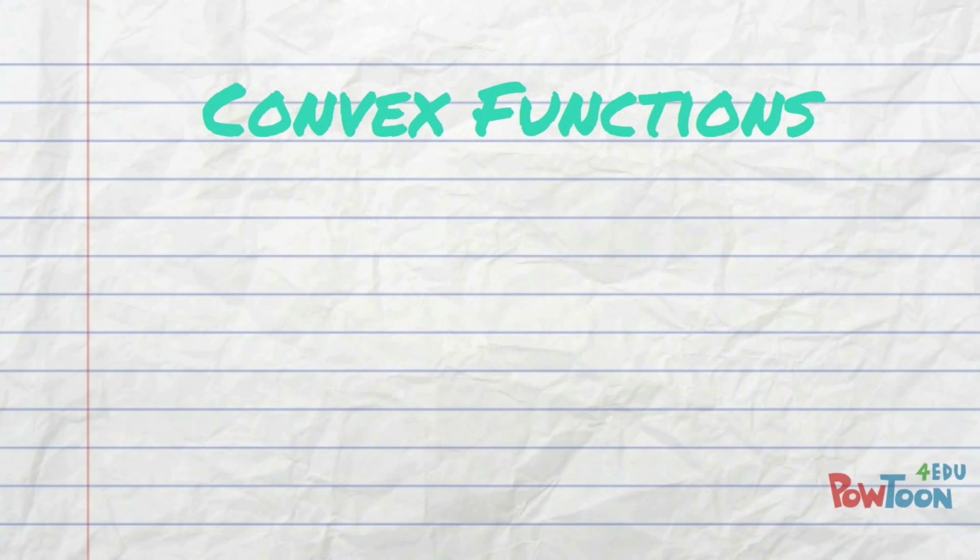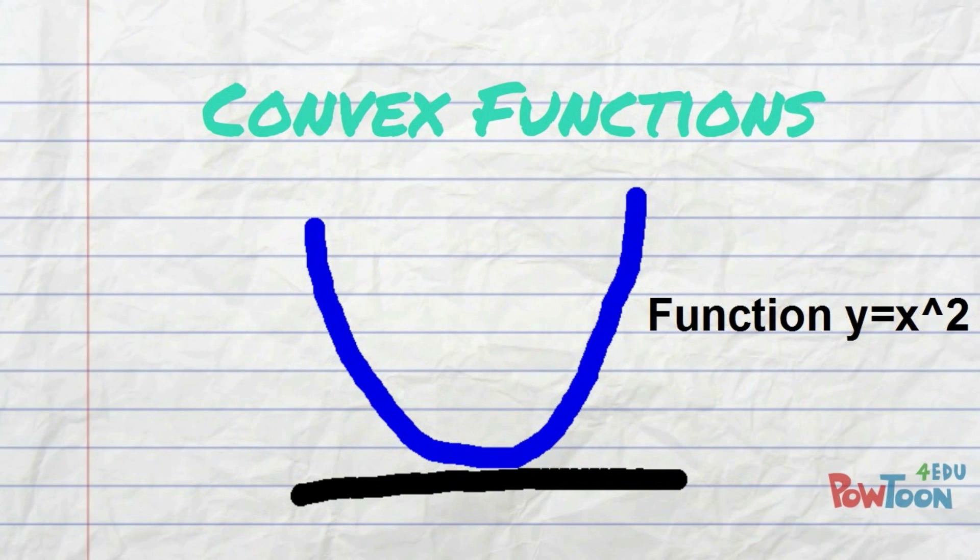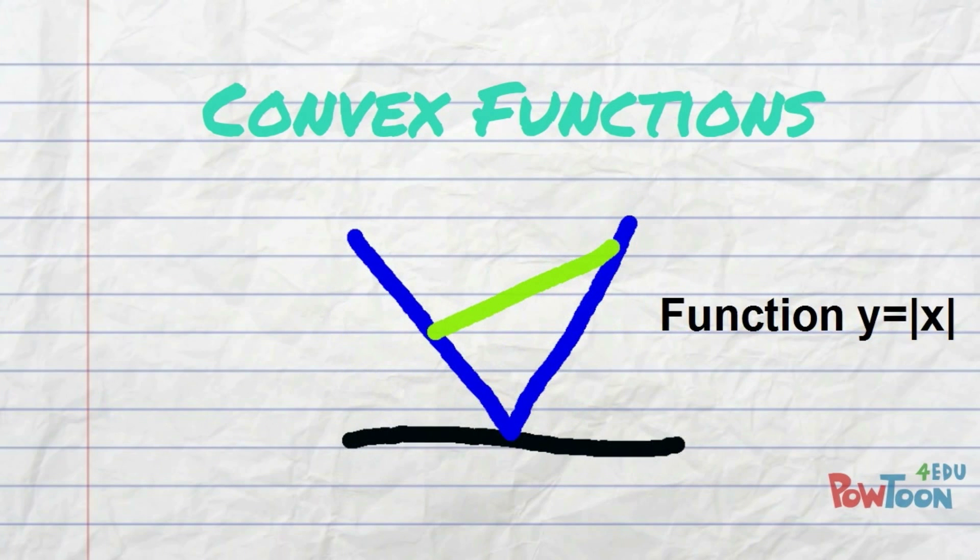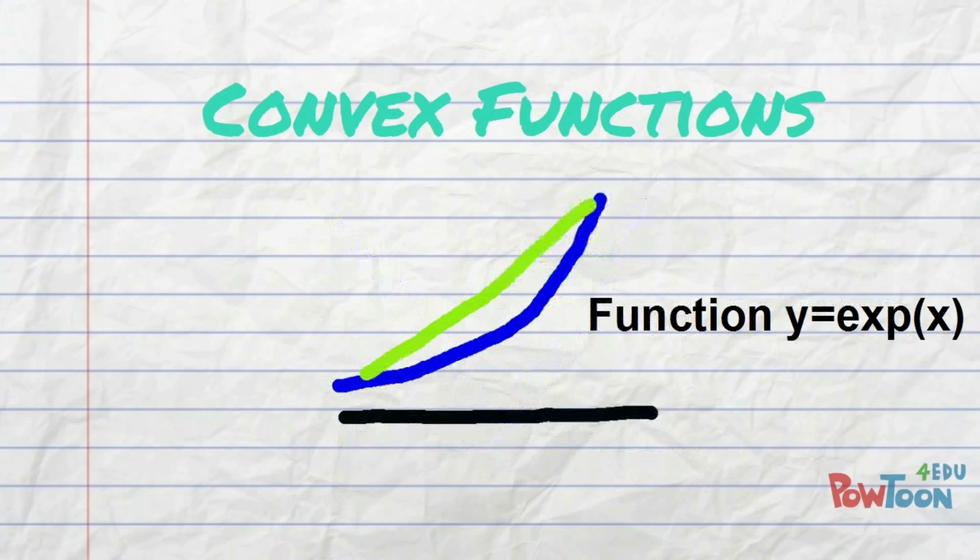To understand our last property of expectations, we first need to look at convex functions. Recall that a function is convex if the secant line connecting any two points on the graph lies on or above the graph. For example, x squared, absolute value of x, and e to the x are all convex functions.